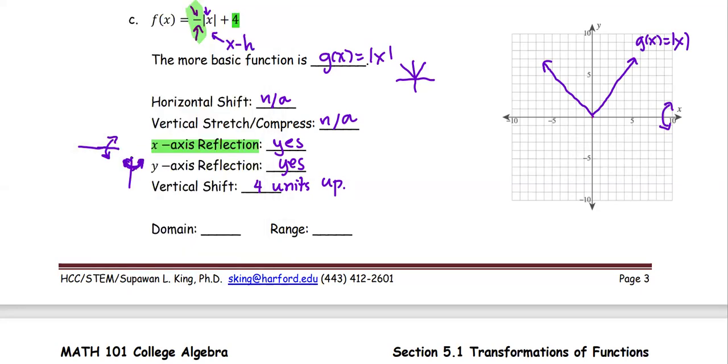And also shift upward 4 units. So we're going to start from reflection and then add 4. So reflection.